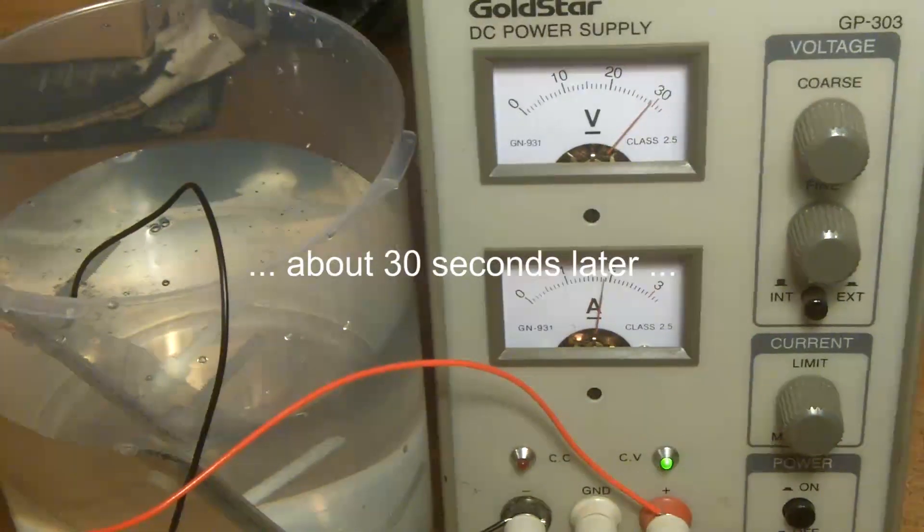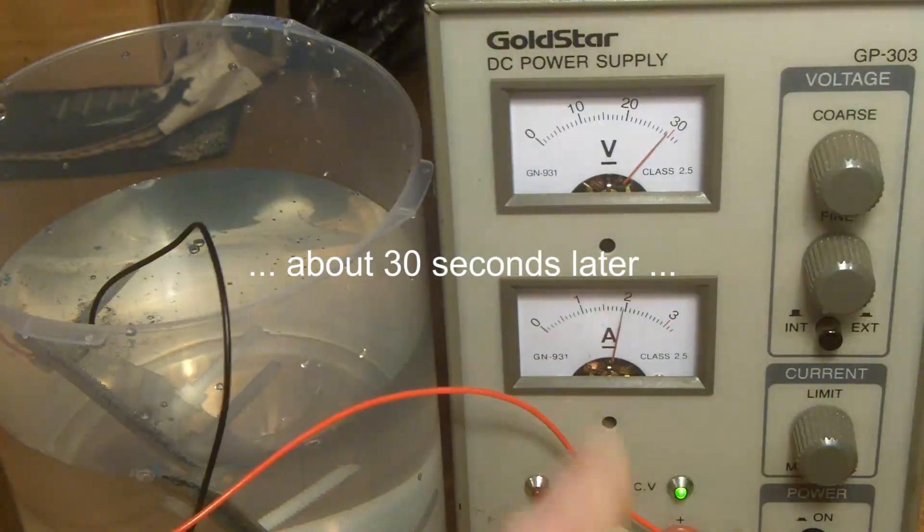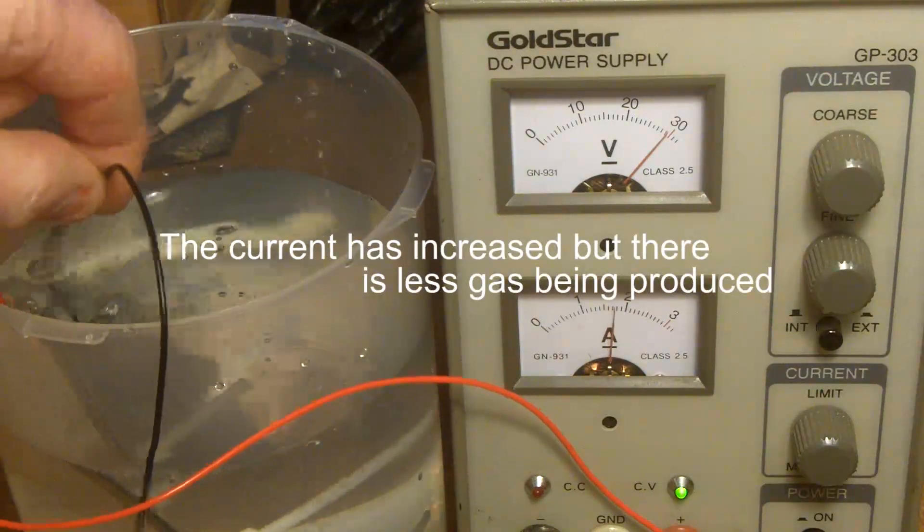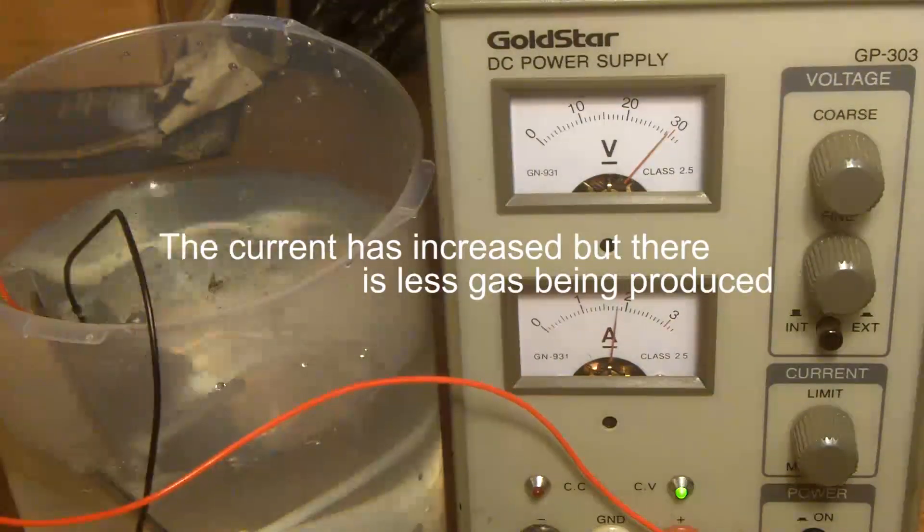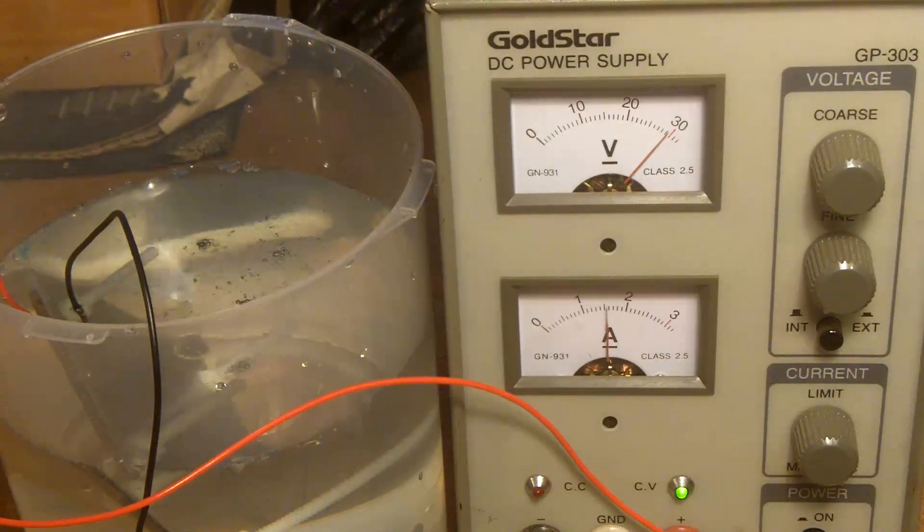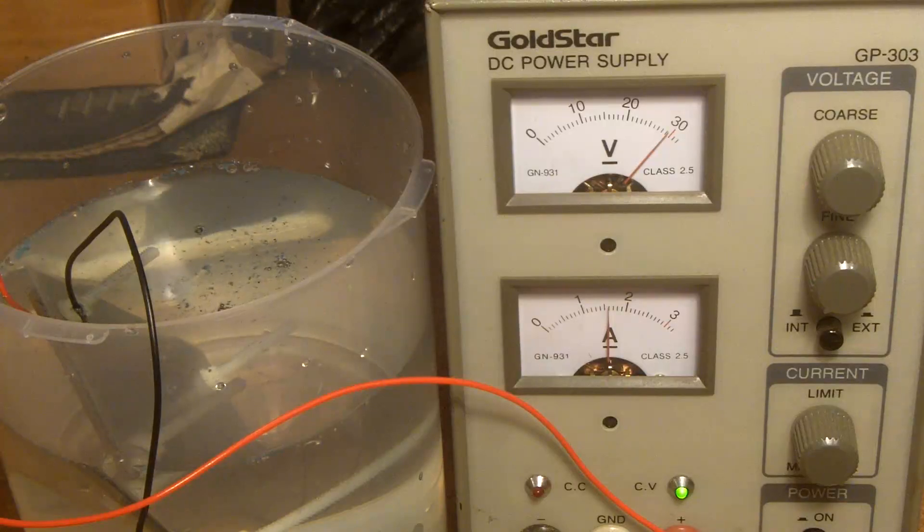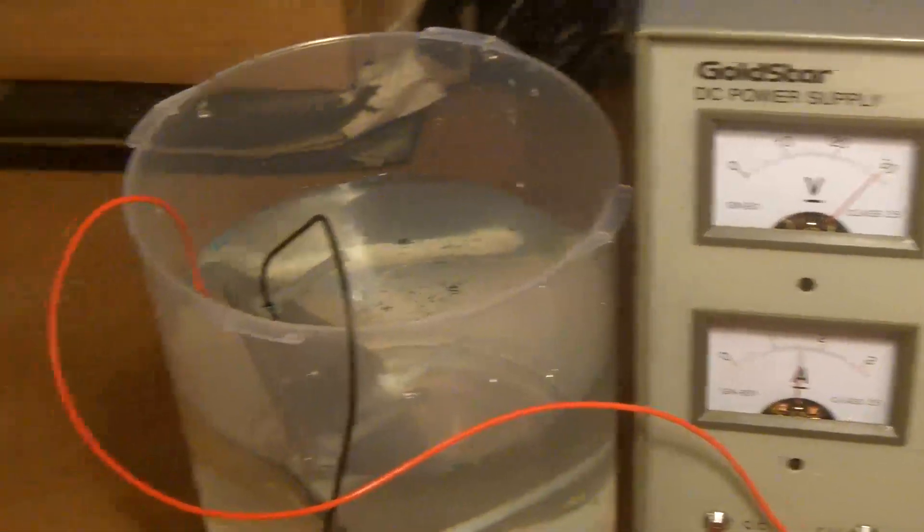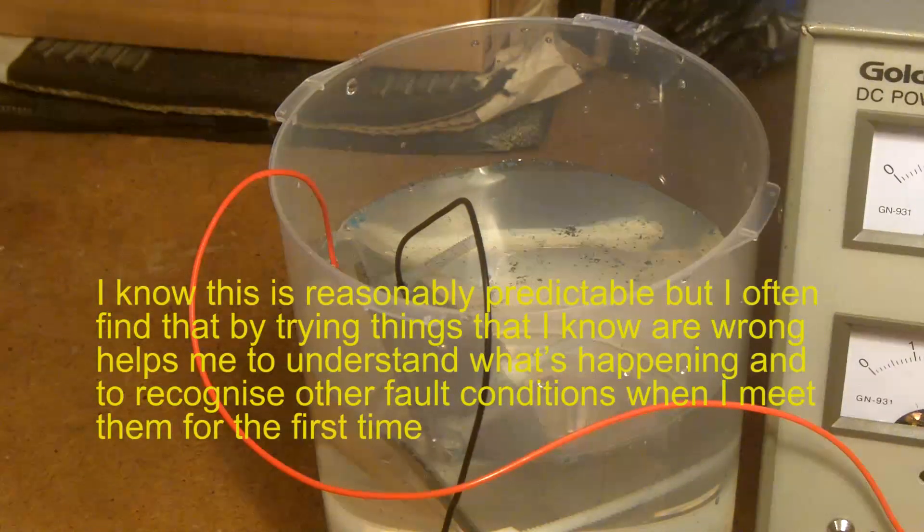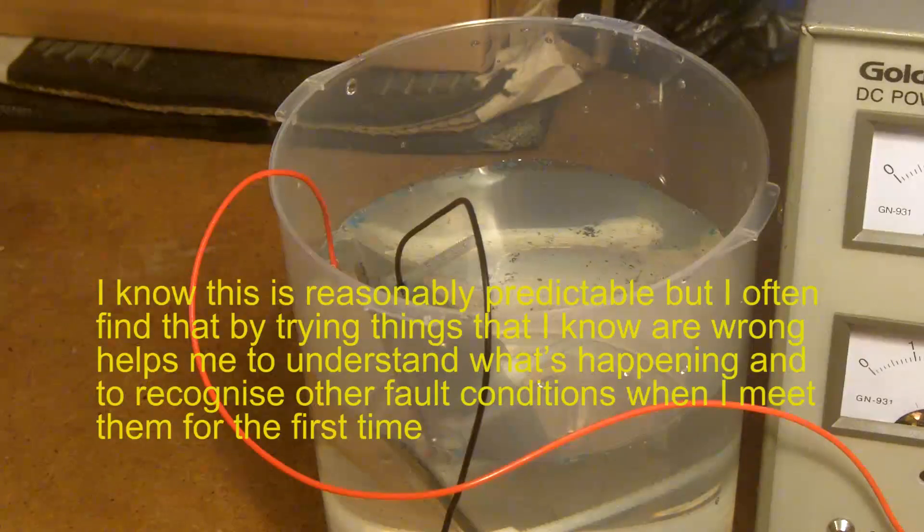Interestingly, the current is coming back up again. It's variable but there's quite a lot of what looks like verdigris, the green gunge that you get off copper coming out into the water.